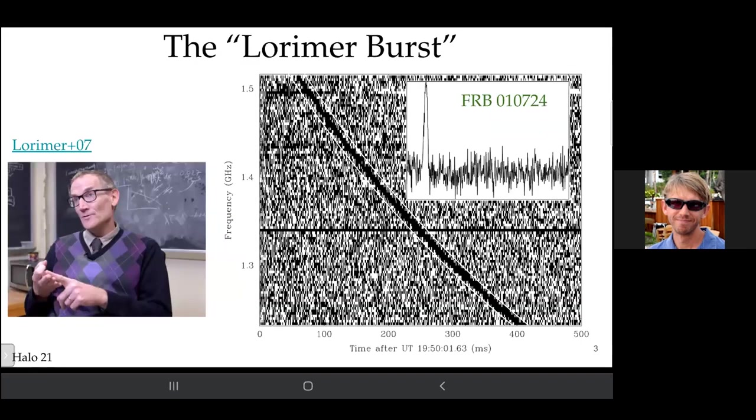FRBs in my opinion begin with the Lorimer burst. That's Duncan Lorimer from West Virginia University. He detected, I'd say by accident, the first fast radio burst, given that name FRB 010724, detected on 2001 July 24th by the Parkes telescope.